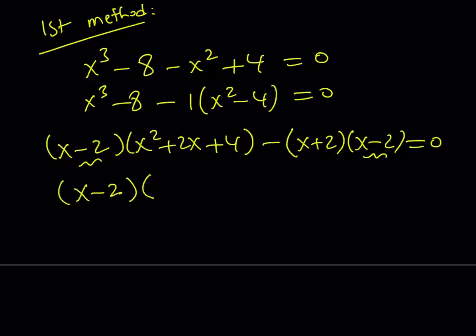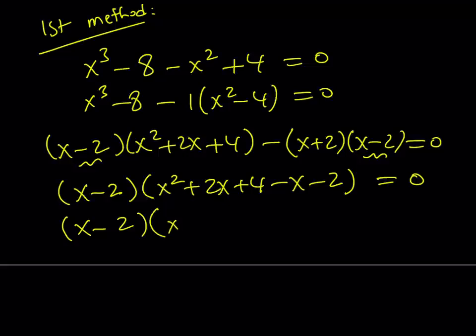And once I take it out, the rest is going to be x² + 2x + 4 minus (x + 2) in parentheses. So that's going to be like -x - 2 since we've taken out x - 2. And if you simplify this, you're going to get (x - 2)(x² + x + 2) = 0.